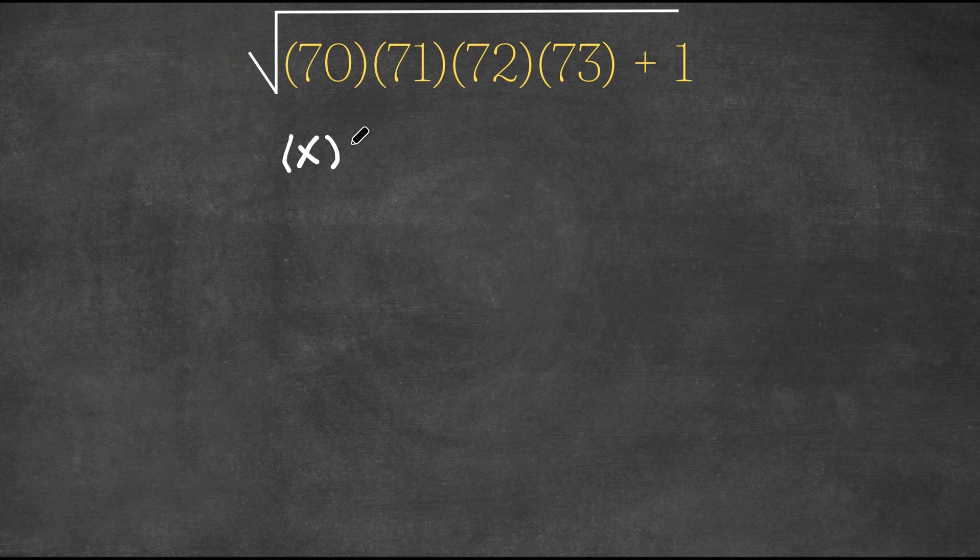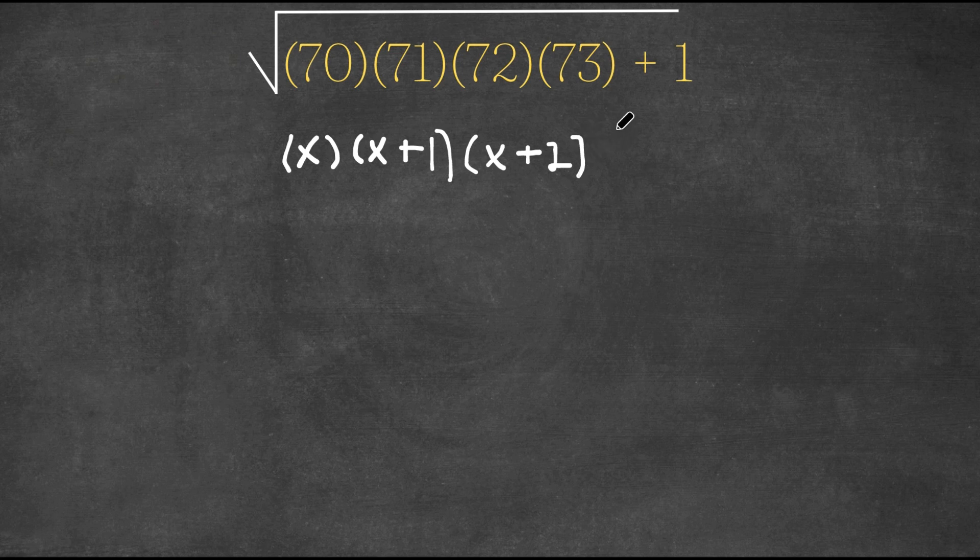Then that means 71 would be x plus 1, 72 would be x plus 2, and 73 would be x plus 3. And we have the plus 1 at the end.